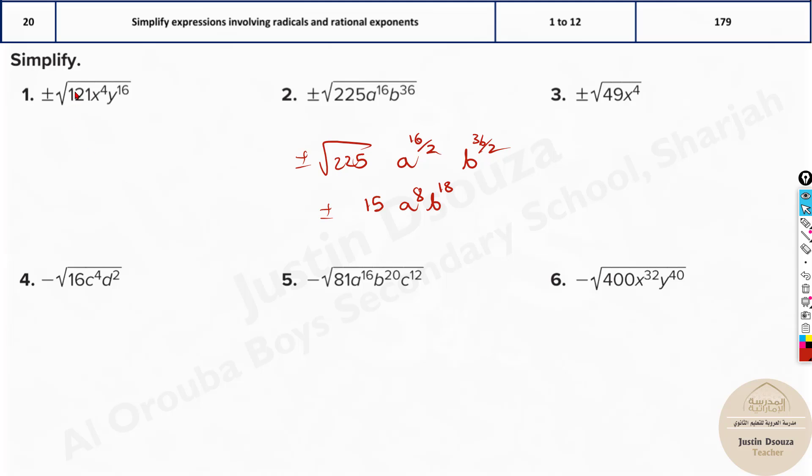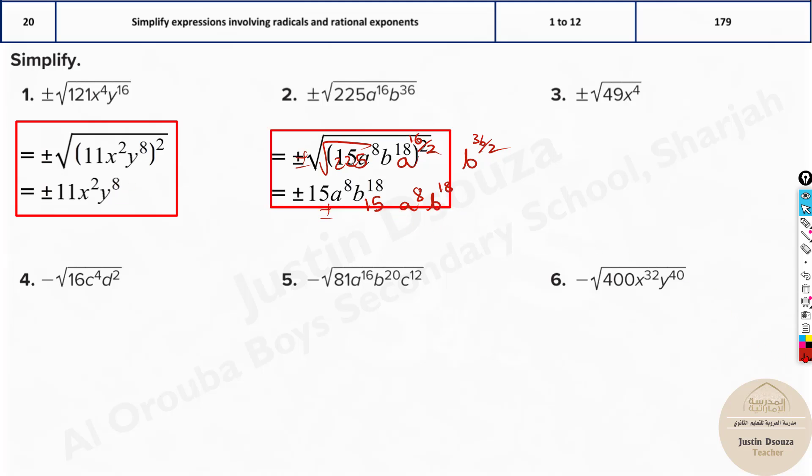As simple as that. Over here, square root of 121 is 11. Don't forget the plus or minus, plus or minus 11. And 4 divided by 2 is 2, y divided by, 16 divided by 2 is 8. We got this over here.